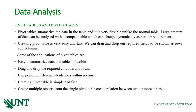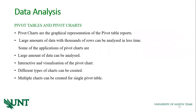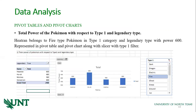The next part of the analysis uses pivot tables and pivot charts. Pivot tables are used to summarize data and perform different calculations very fast in a simple manner. Pivot charts are the graphical representation of pivot tables, and multiple charts can be created from a single pivot table. The total power of a Pokemon with respect to type 1 category, including whether they are legendary, can be found easily using pivot tables.